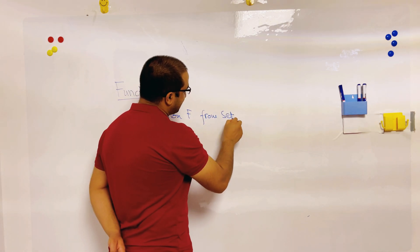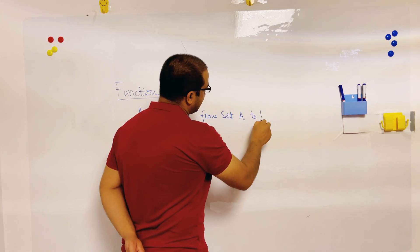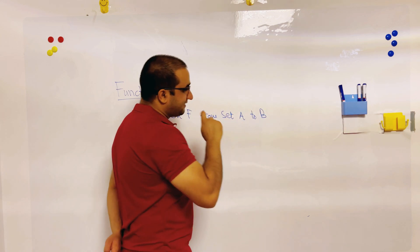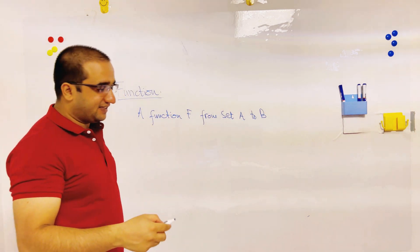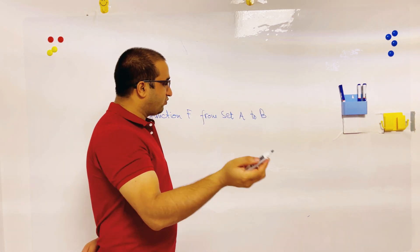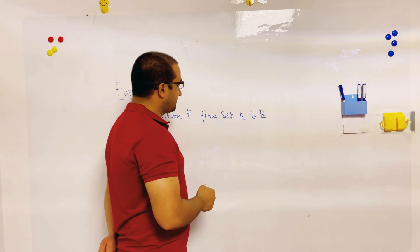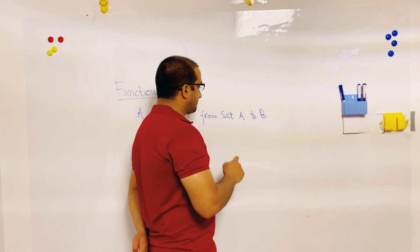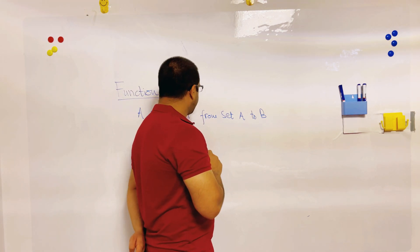A function is a variable that can change over time. A function is a binary relationship between sets.